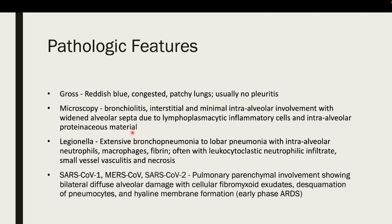For pathologic features, grossly you find a reddish-blue, congested, patchy lung with no pleural involvement. On microscopy of the lesion, you can see bronchiolitis, interstitial involvement, and minimal intra-alveolar involvement with widened alveolar septa due to lymphoplasmacytic inflammatory cells. For typical pneumonia the predominant white blood cell is neutrophils, but for atypical pneumonia it is usually lymphocytes and plasma cells, producing intra-alveolar proteinaceous material.